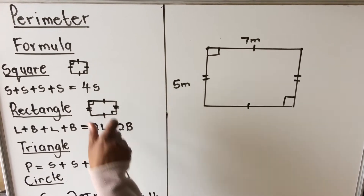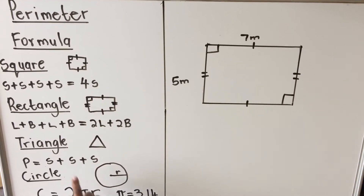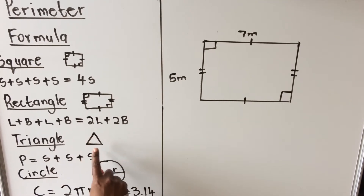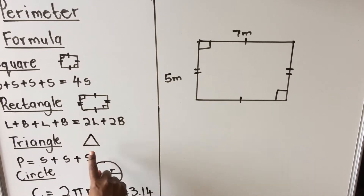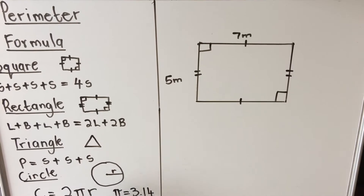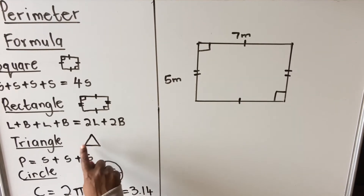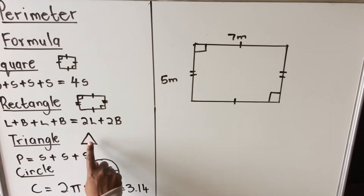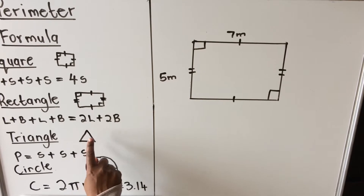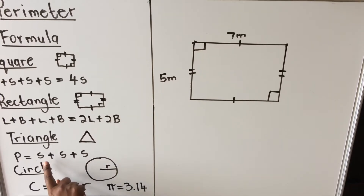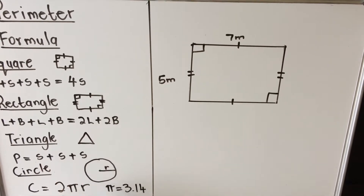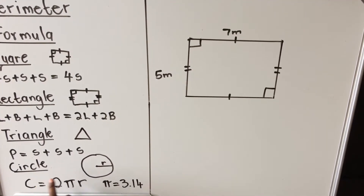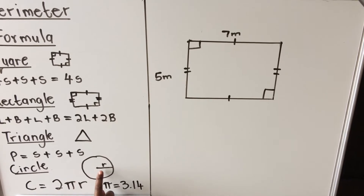For a triangle, when you calculate the perimeter you just add all the sides that are there. A triangle has three sides, so the formula is side plus side plus side.